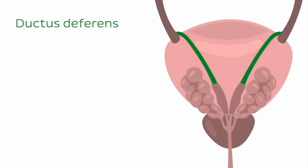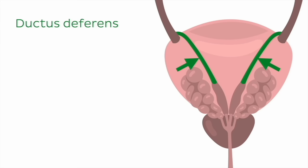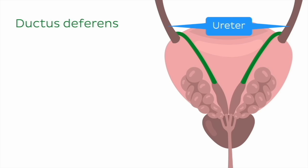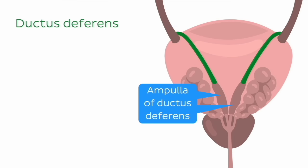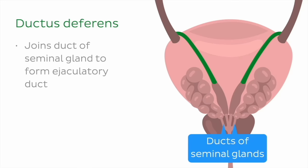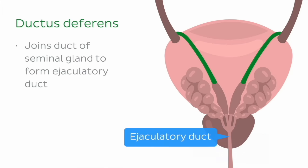In this image, we can see the bladder and the ductus deferens passing medial to the ureter, before enlarging to form the ampulla of the ductus deferens. It then terminates by joining the duct of the seminal gland to form the ejaculatory duct.